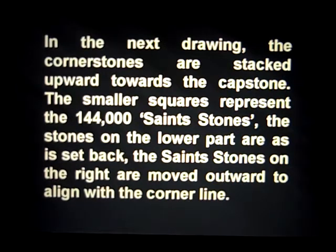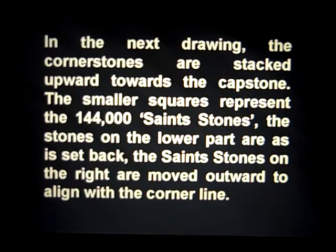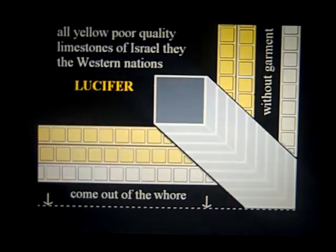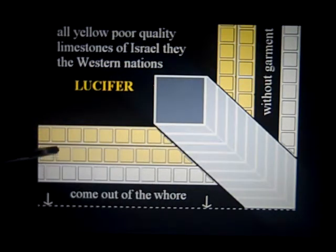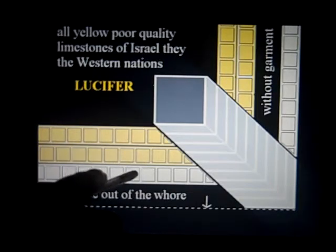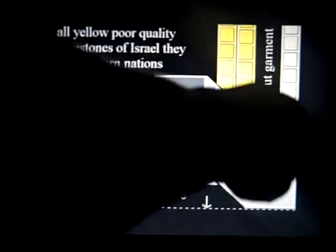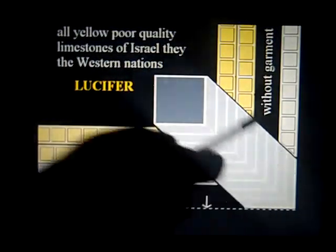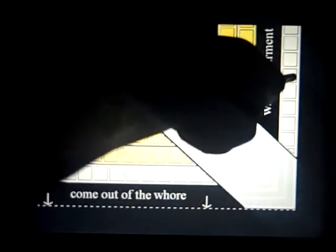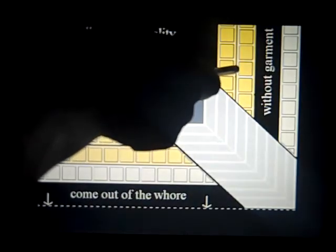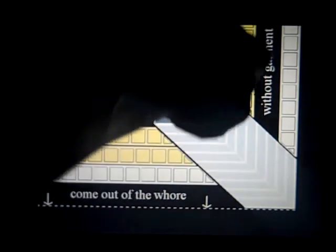In the next drawing, the cornerstones are stacked upward toward the capstone, and the smaller squares represent the 144,000 saints stones. The stones on the lower part are set back; the saints stones on the right are then moved outward to align with the corner line. They're still attached to the hall — this is the body of the pyramid. These inferior yellow limestones contrast with the pure white alabaster stones. They must come out of the hall, and when they do, they lock in perfect symmetry in line with the four cornerstones, leaving a gap between ourselves and the defiled body of the churches, which is Lucifer — this being without garment.